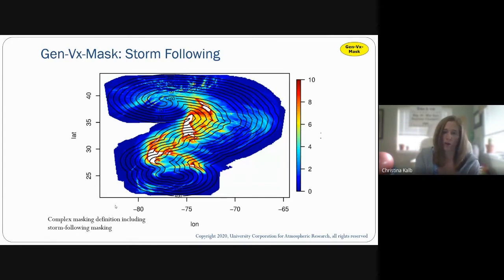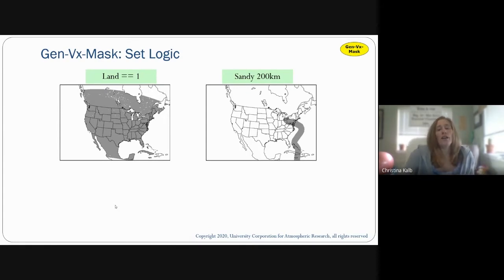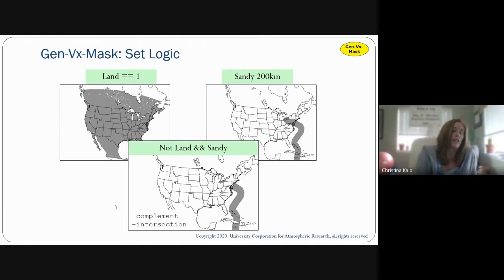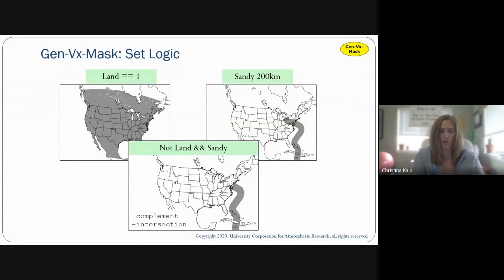There are additional examples of more complex things you can do with GenVXMask. One example is storm following — following a storm track with a complex masking region. You can also use set logic: if you want combinations of input files, you can use the complement and intersection. For example, with a land region and Hurricane Sandy's track, using not-land intersected with Sandy gives a mask track that shows the storm track but omits the region over the northeast that's over land. That's a quick overview of what you can do with GenVXMask.